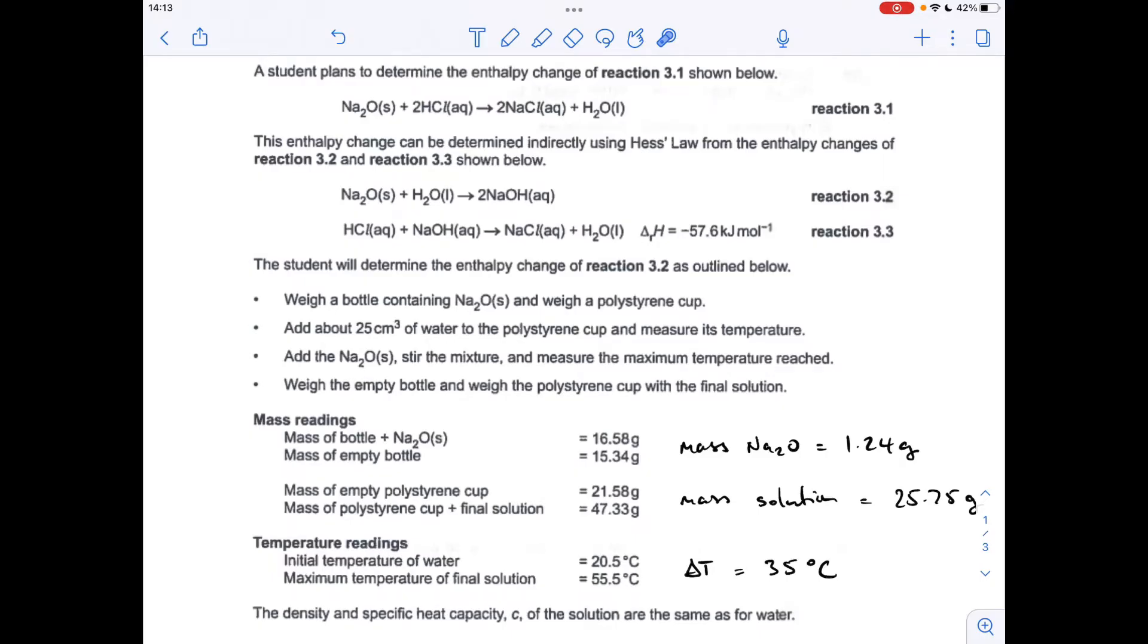In the experiment for 3.2, it's a calorimetry experiment, so what they've done is they've used 1.24 grams of sodium oxide. I've got that from just the difference between those two masses and they've put some water in a cup and then added the sodium oxide. So the mass of the solution, whose temperature changed, is the difference between those two values, so it's not 25 grams. It says about 25 cm cubed of water. So the mass of the solution is that many grams, 25.75.